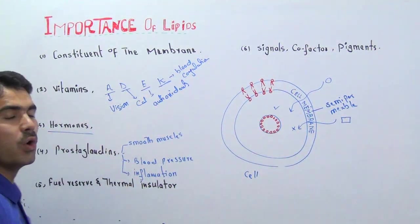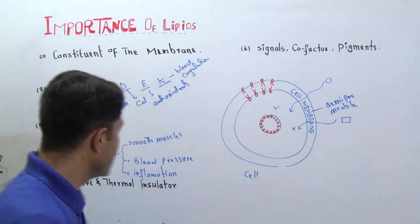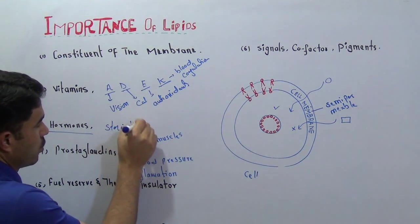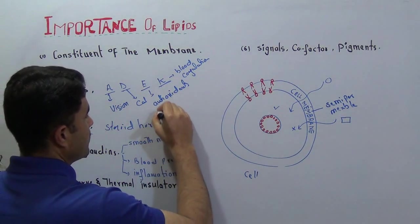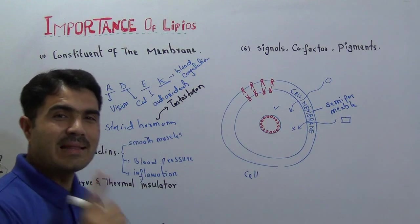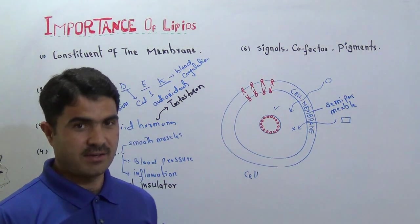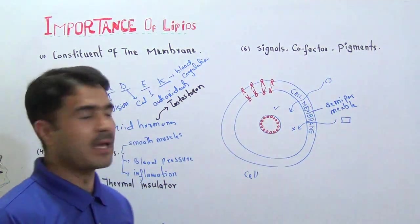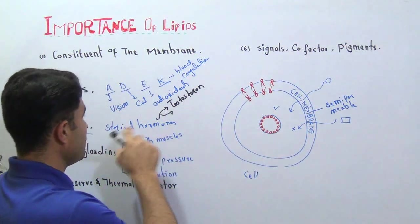Then we have hormones. There are different types of hormones; among these, there are steroid hormones. Number one: testosterone, the male sex hormone that helps in the production of sperm and brings secondary sex characters like beard, thickening of voice, male characters, and development of sexual organs.